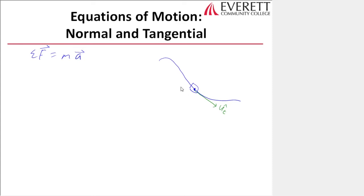The second unit vector is UN, which points toward the instantaneous center of rotation. If we approximate every curve as a circle, UN always points toward the center of that circle.